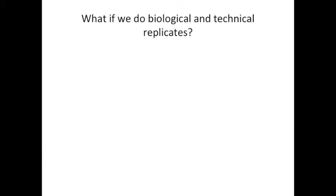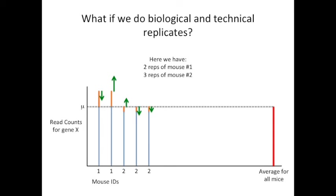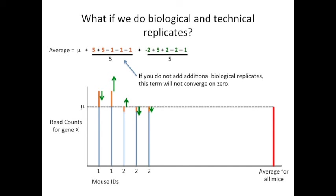What if we do biological and technical replicates? Can we get the best of both worlds? Unfortunately, the answer is no, and I'll show you why. Imagine we have two technical replicates for mouse number one, and three technical replicates for mouse number two. Just like before, when we calculate the average read count from our sample, we get the average mu plus the two fractions, one for biological and one for technical variation. However, look at the numerator for the biological variation. If we add additional technical replicates, not biological replicates, we won't converge on zero.